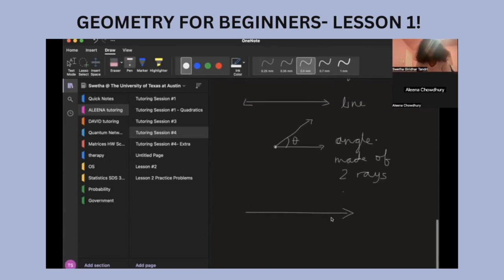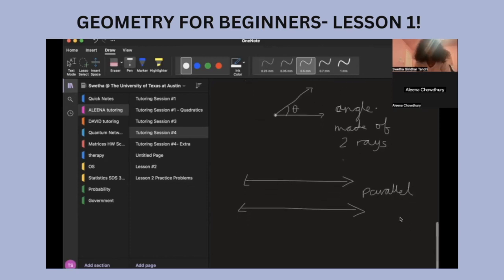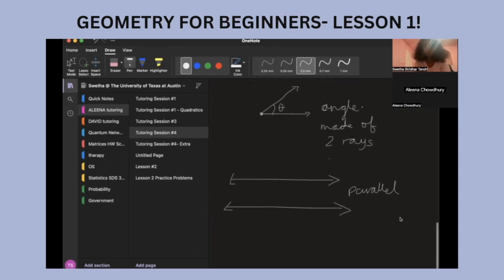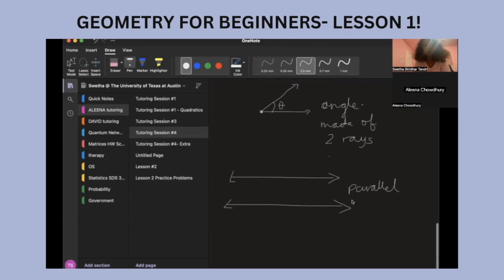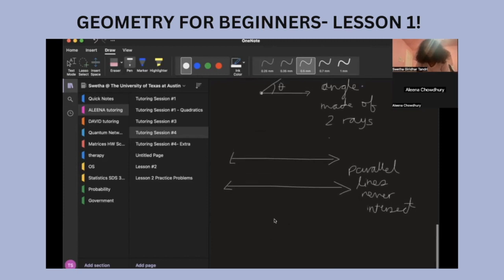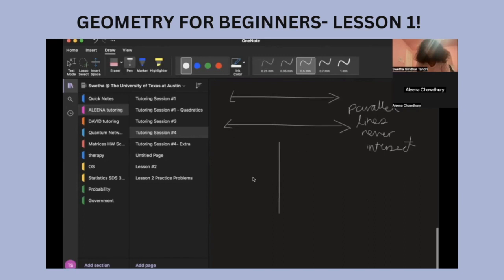Just to recap, parallel lines never intersect at all. Meanwhile, perpendicular lines always intersect.